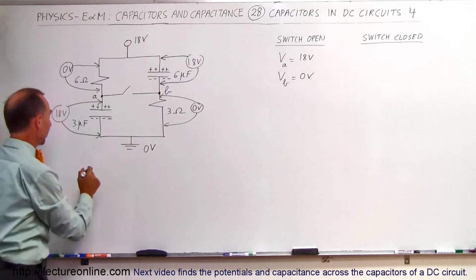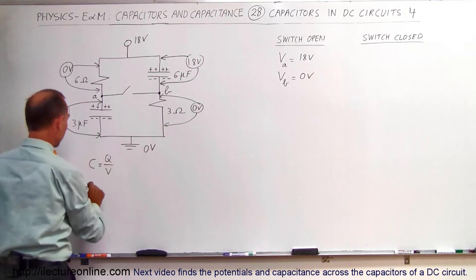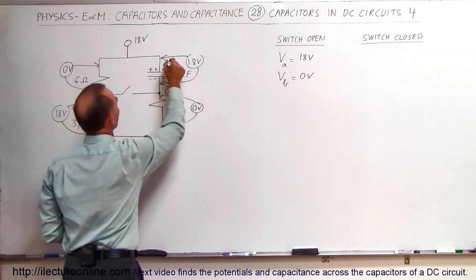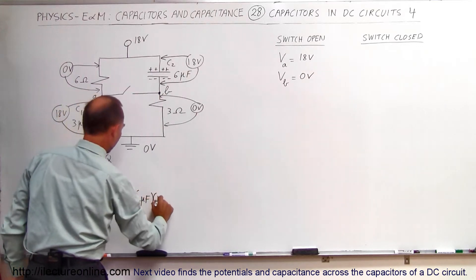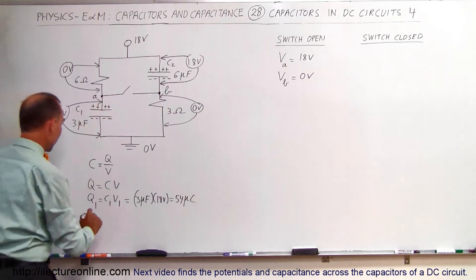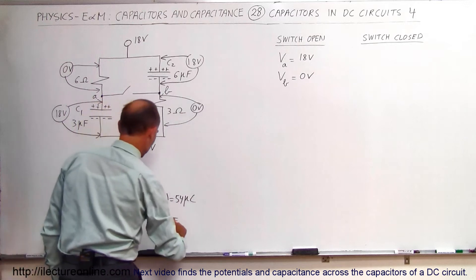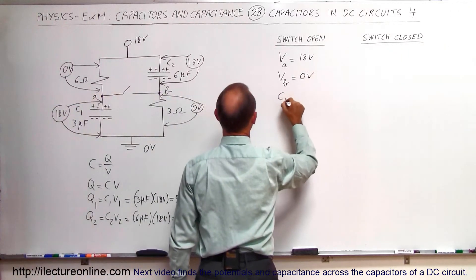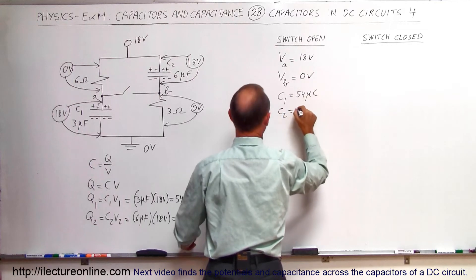We can figure out the charge on each capacitor. Since C = Q/V, we get Q = C × V. So Q1 = C1 × V1. Calling the left capacitor C1 (3 microfarads) with 18 volts across it: Q1 = 54 microcoulombs. For Q2 = C2 × V2 = 6 microfarads × 18 volts = 108 microcoulombs. So the initial charges are: C1 = 54 µC and C2 = 108 µC.